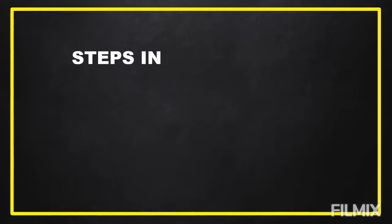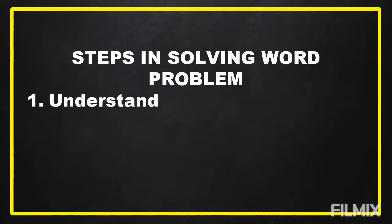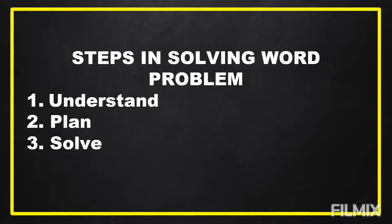In solving word problems, we have some steps to follow. Number one is we're going to understand the problem. Next is we're going to have a plan. After that, we're going to carry out the plan or we're going to solve the problem. And the last one is we're going to check whether our answer is correct or not.